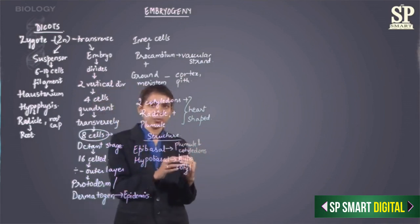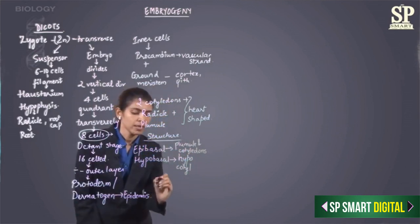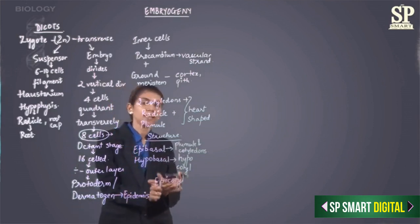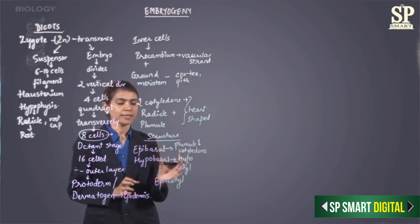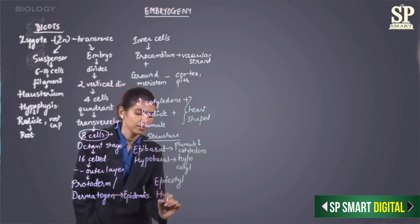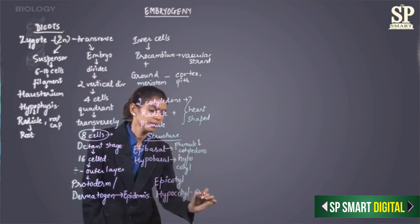The part of the embryonal axis above the cotyledons is called the epicotyl. This epicotyl ends in the plumule, and the plumule will further go on to form the shoot tip. The part of the embryonal axis below the cotyledon is called the hypocotyl. The hypocotyl ends in the radicle and root cap.